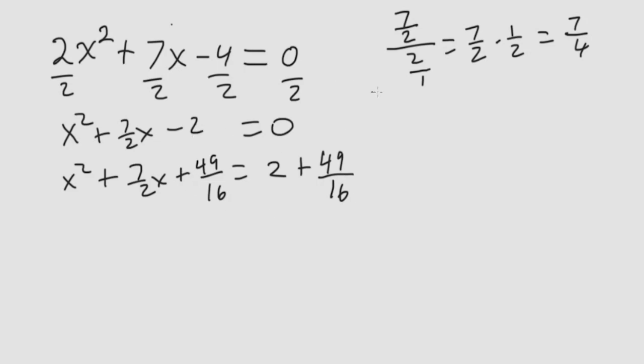What we want is a perfect square, so we have x plus a squared, and the 7 fourths is the a.